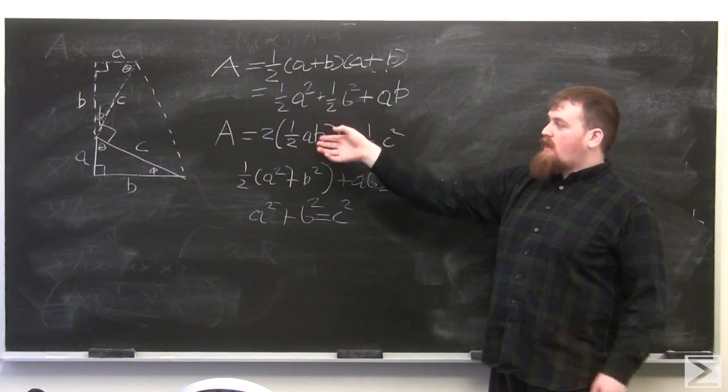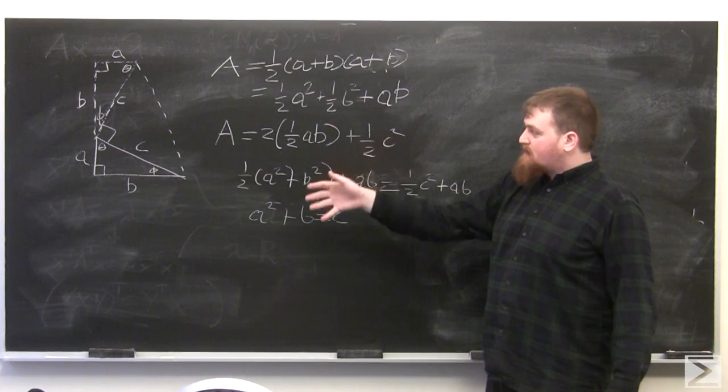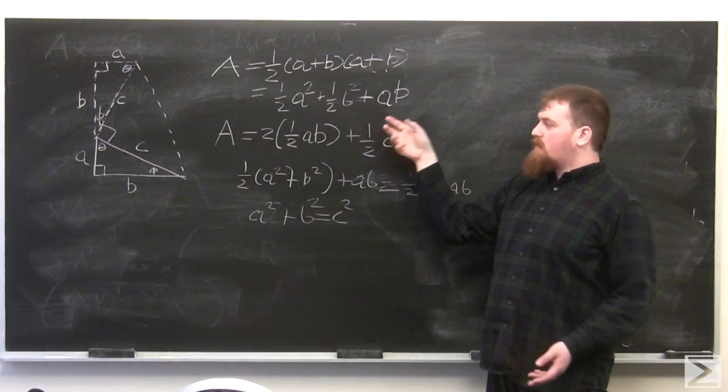The area of this trapezoid is equal to one half times the base plus the base times the height. Base plus base is A plus B, height is A plus B, so the area equals one half A squared plus one half B squared plus AB.